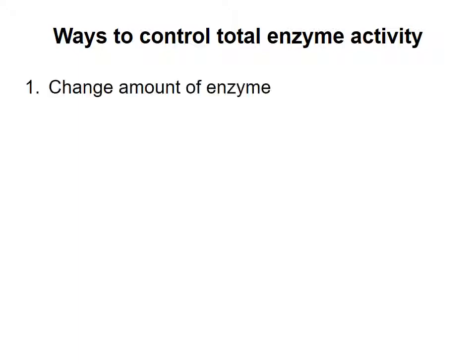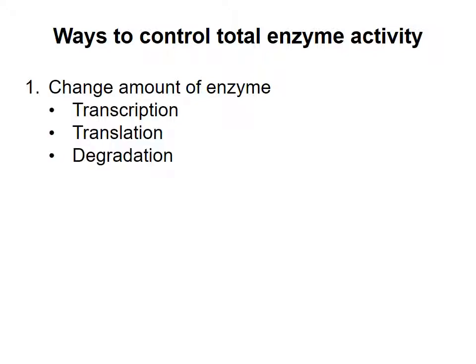Changes in total enzyme activity can be accomplished in several main ways. The cell can change the amount of enzyme available by adjusting the relative rates of synthesis and degradation. This topic — regulation of gene expression — is covered elsewhere in the course. Changes in enzyme levels normally occur over relatively long timescales, from hours to days.